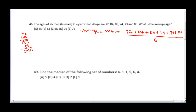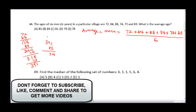Continuing the addition: 244 + 74 = 318, then 318 + 73 = 391, and 391 + 83 = 474. Now we divide by 6, since there are six men. Performing the long division: 474 ÷ 6 = 79. So our final answer is 79, which is option D.